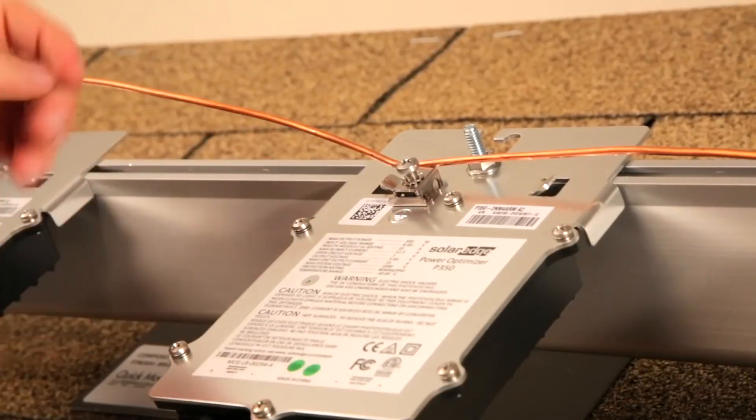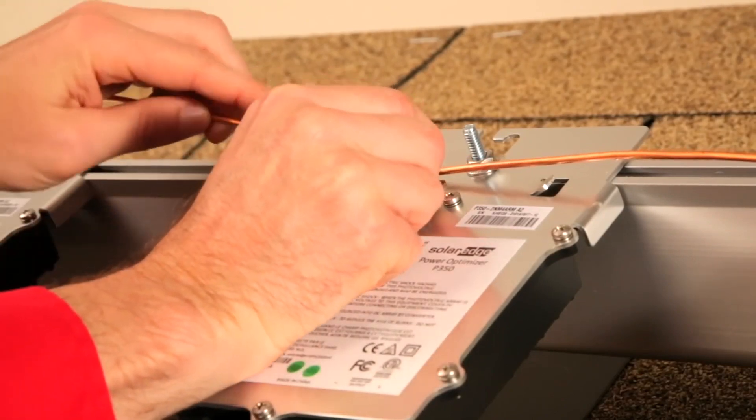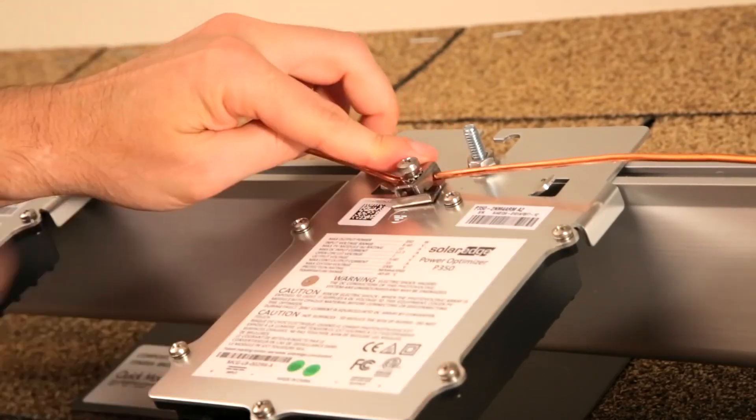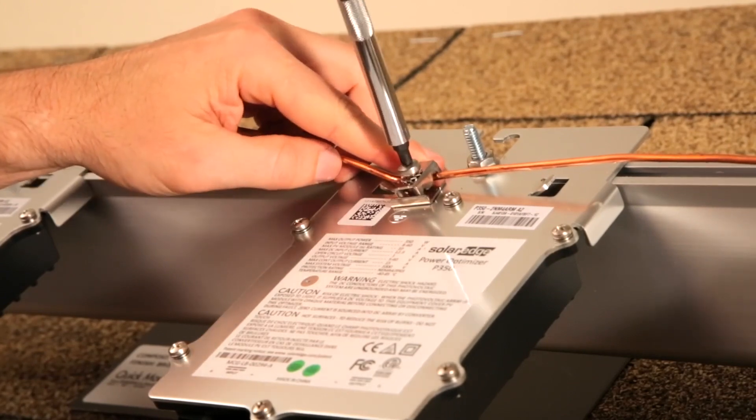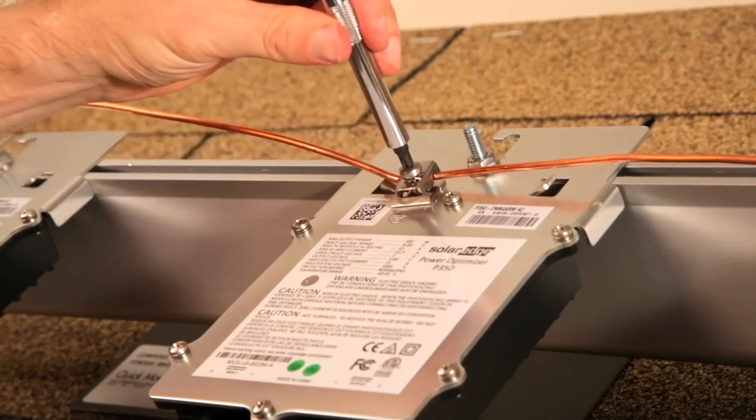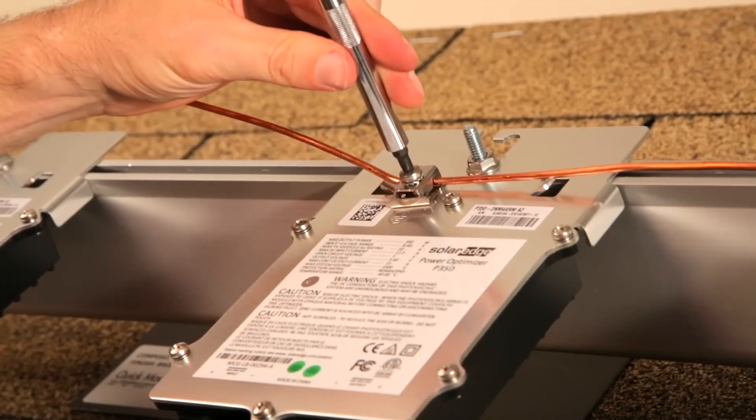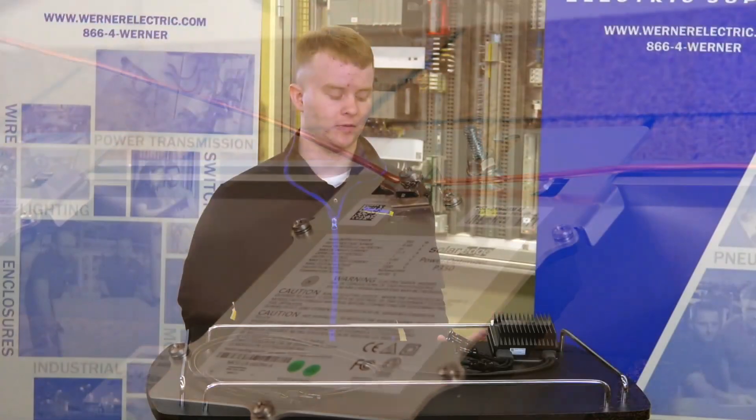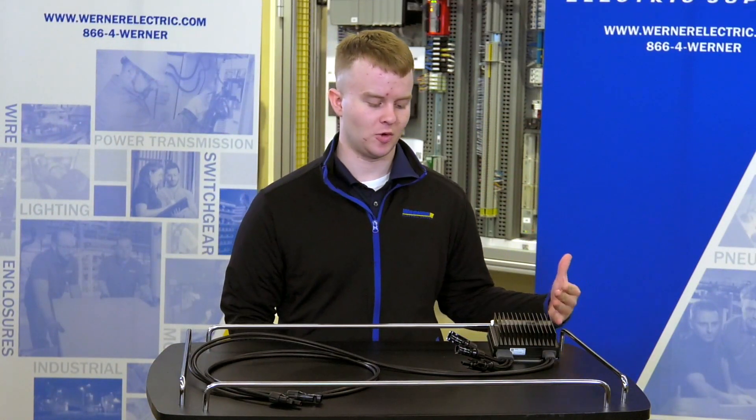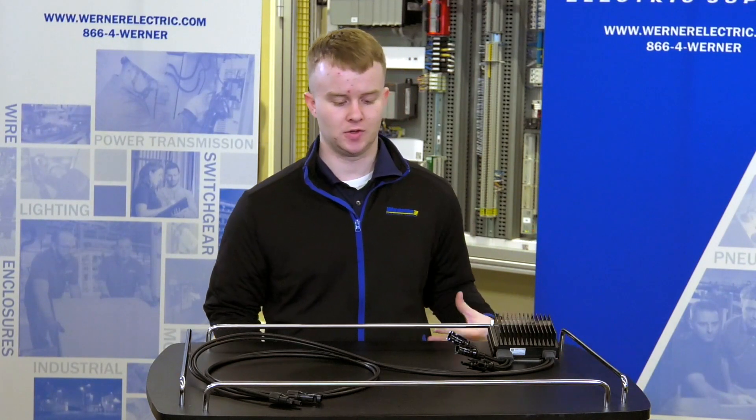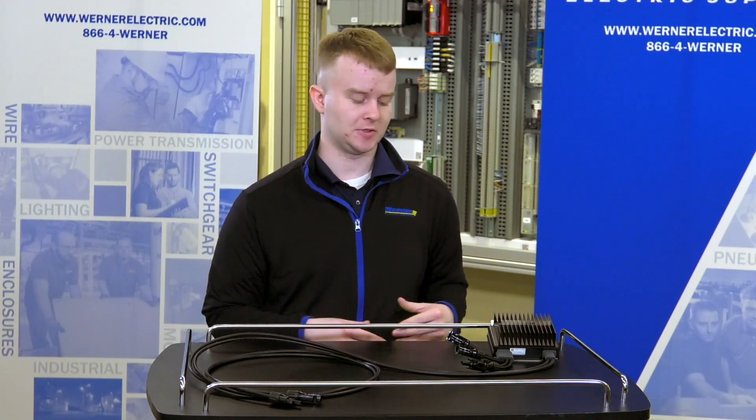The P860 optimizer is perfect for solar modules that have regular current outputs between 8 to 10 amps. For lower current modules you would actually want to use the P800P optimizer, but today we are seeing more modules being used at the regular levels, which is why I'm introducing the P860.